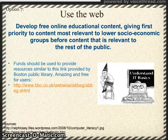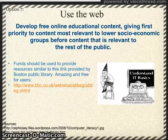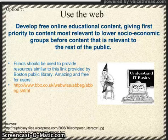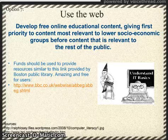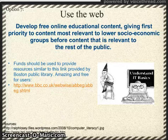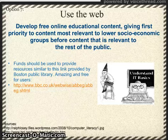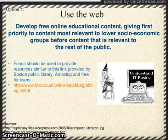Option 7 focuses on developing free online educational content, giving first priority to content most relevant to lower socioeconomic groups. We should use the tools we already have — the web already has plenty of free online educational tools that we could use and enhance by making them more specific to certain groups. Our funds should be used to provide resources similar to the link provided by the Boston Public Library, which is free to users, did not cost much to create, and includes an interactive and easy tutorial on basic computer use skills.